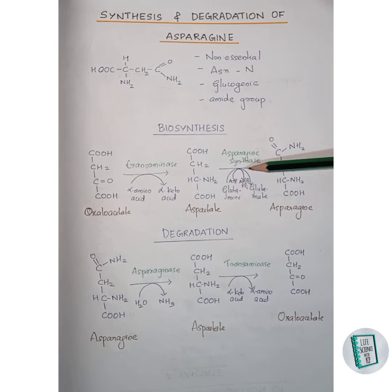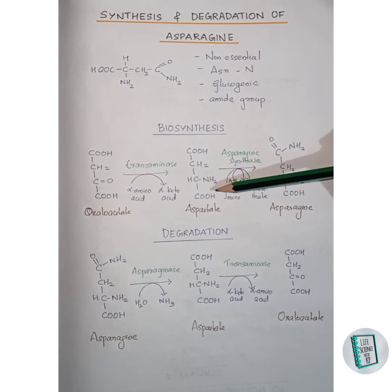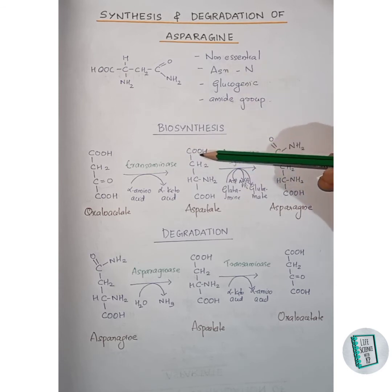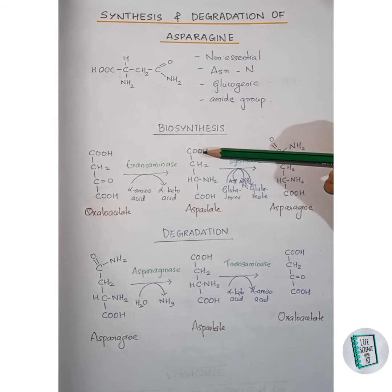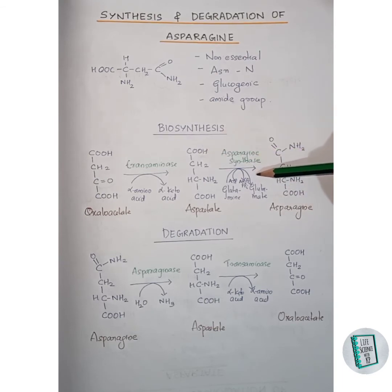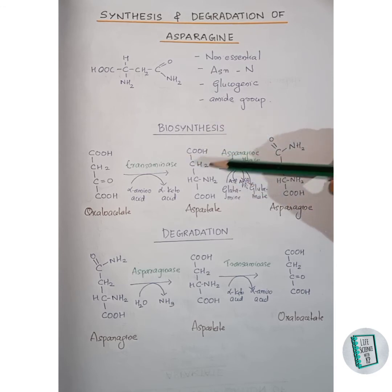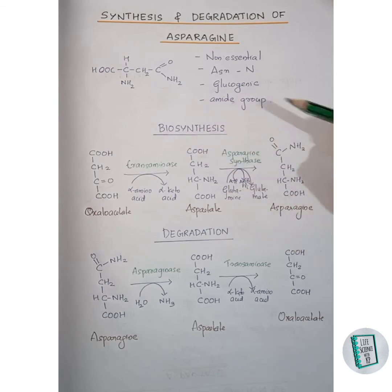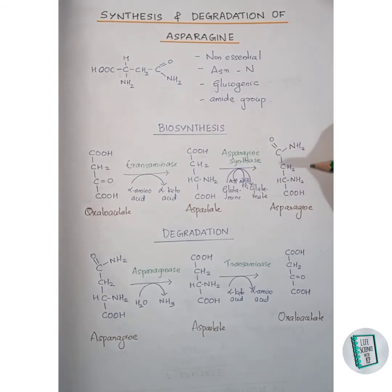Here, glutamine comes in and leaves as glutamate — glutamine donates its amino group to aspartate and asparagine is formed. The OH group of aspartate goes with the glutamate, and the NH2 of glutamine gets attached to this carbon as NH2. This is how asparagine is formed in biosynthesis.